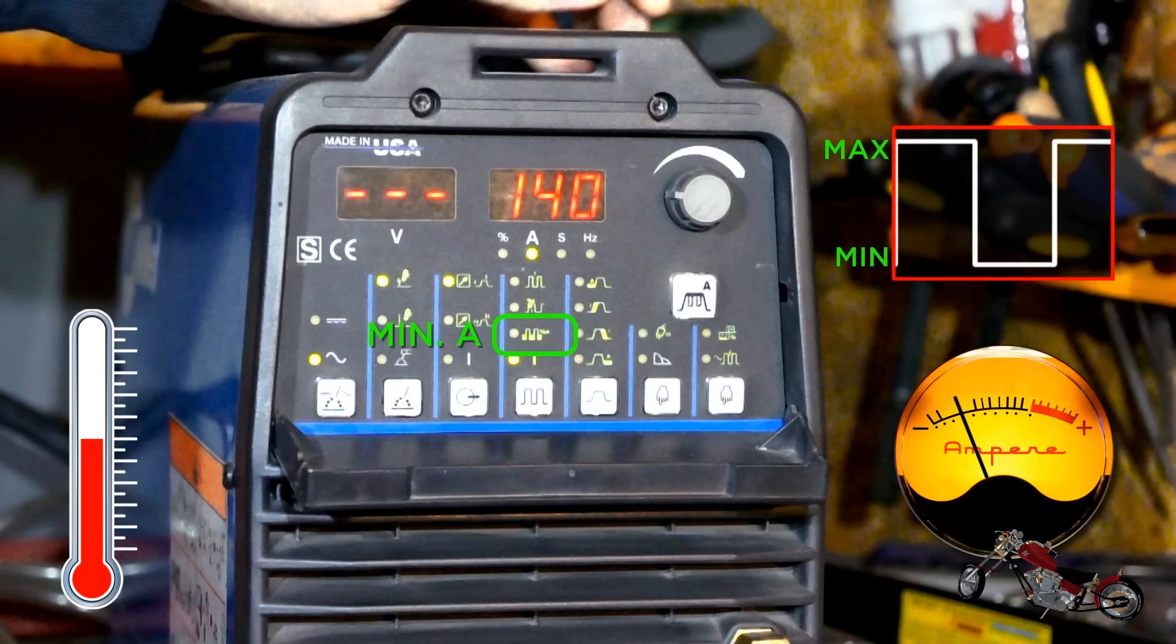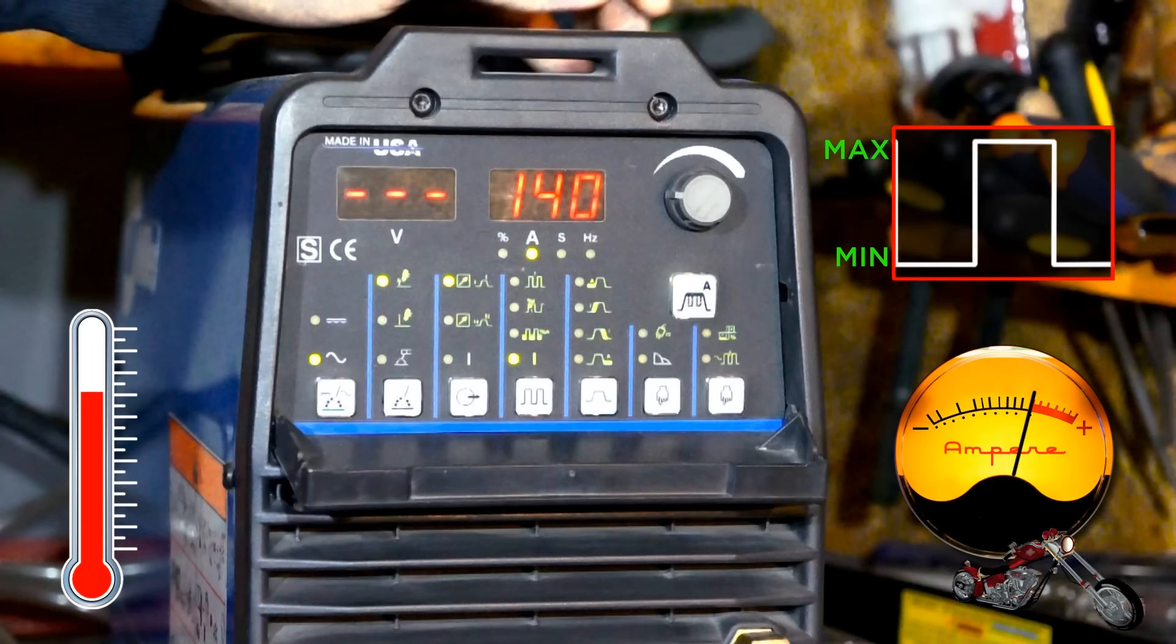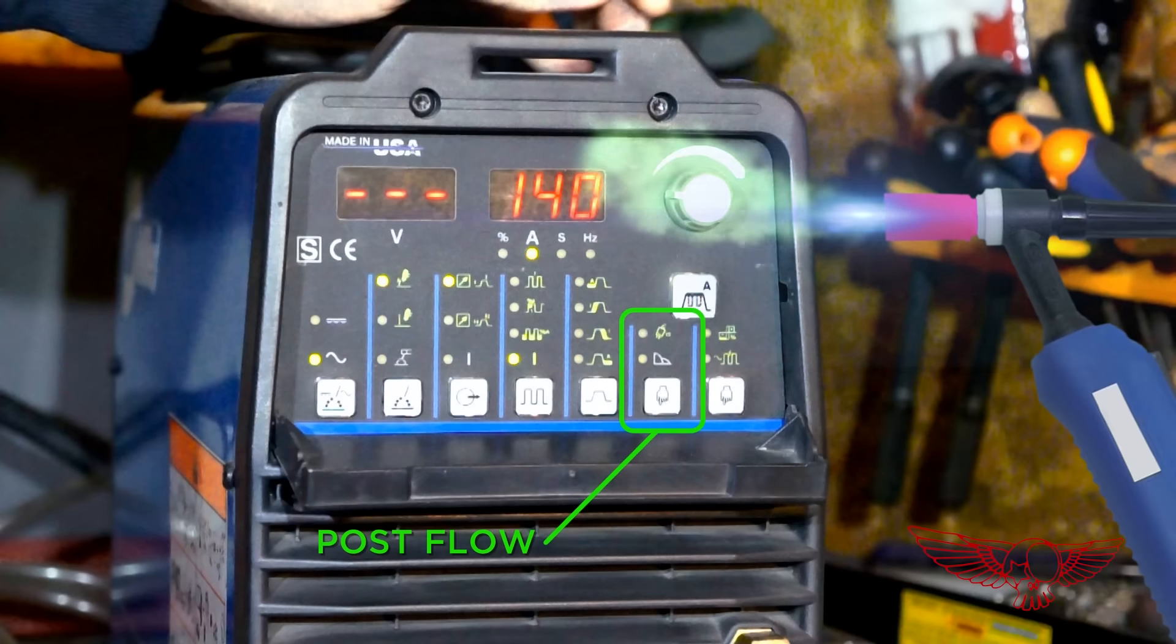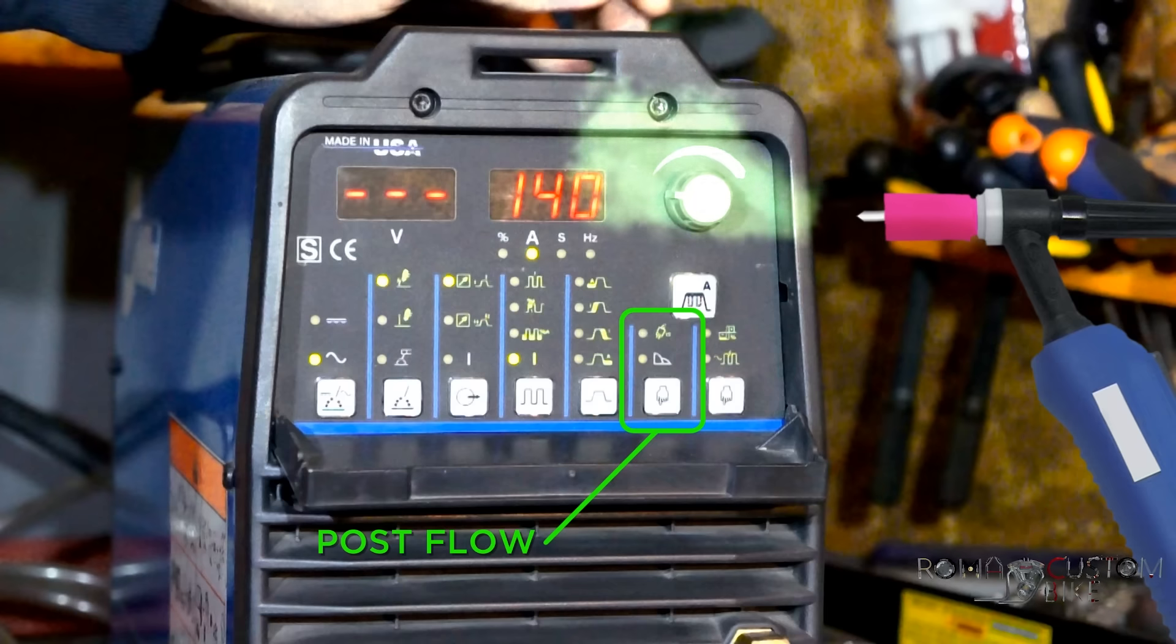Then we have the post-flow setting. It determines how many seconds the flow of gas will remain active after the arc is shut off. This is done so that the weld can be protected from oxygen contamination long enough for it to cool off.